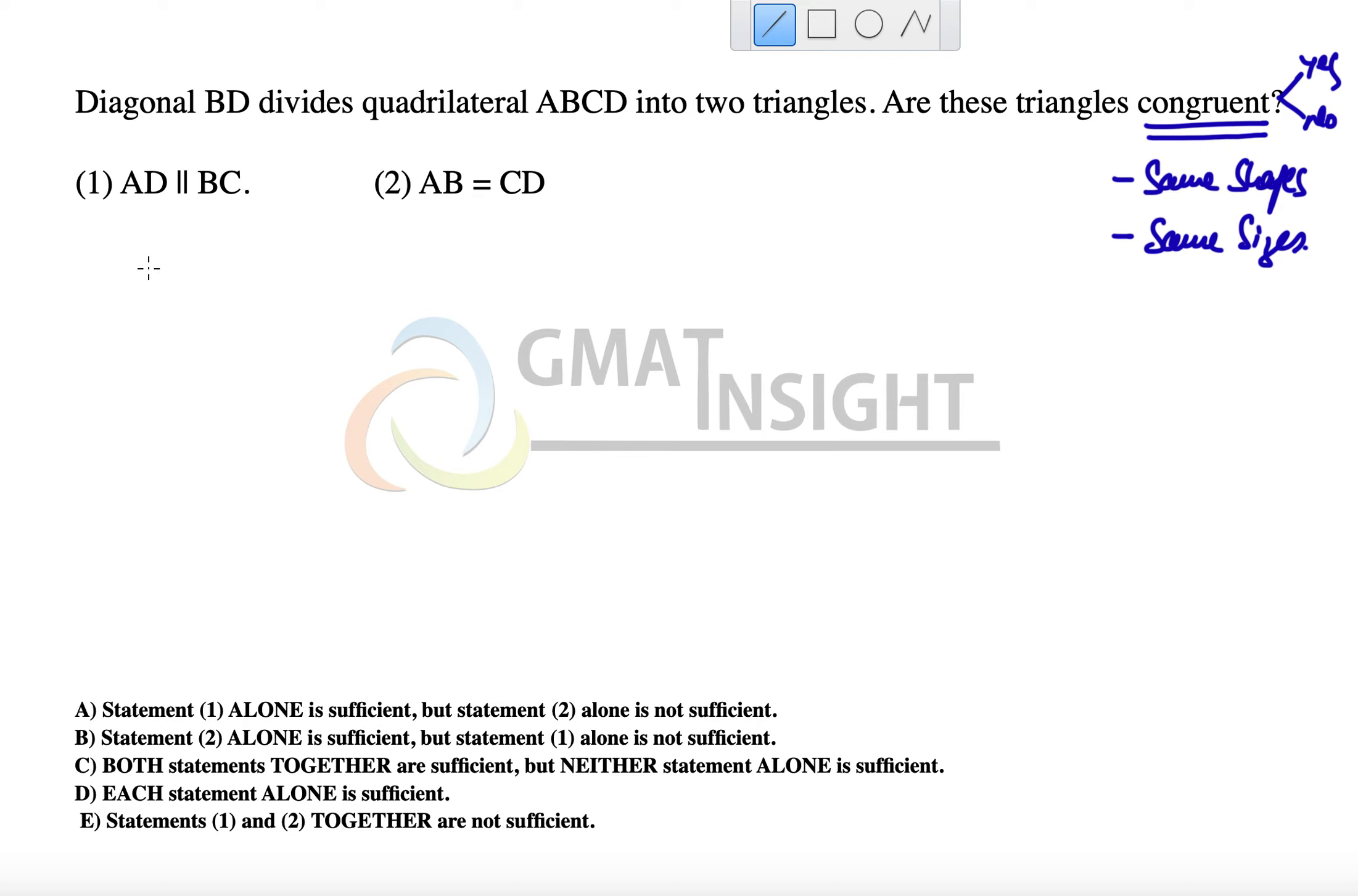Here we have to quickly draw a figure in which AD is parallel to BC, because our sole intention in data sufficiency remains to prove that the statement is not sufficient. So I have drawn one figure in which I have suggested the names are ABCD in which AD is parallel to BC, and diagonal BD is this longer diagonal and that is dividing the quadrilateral into exactly two congruent triangles because they are exactly identical. So answer to the question is yes.